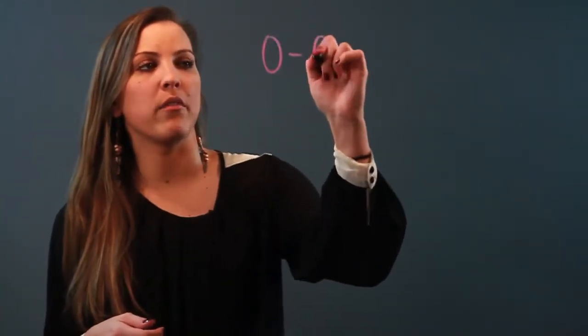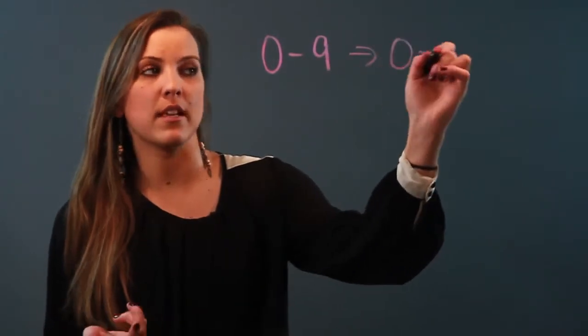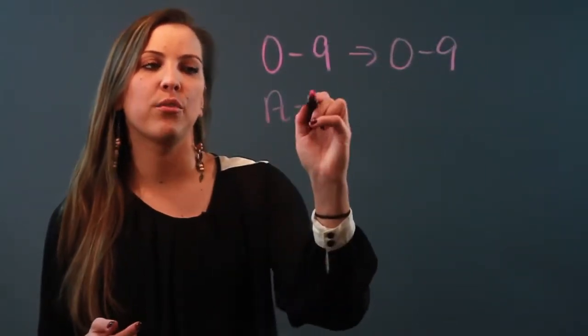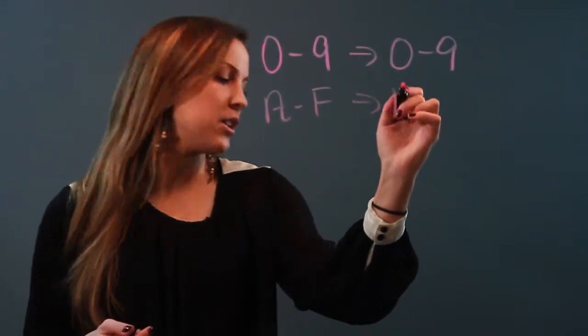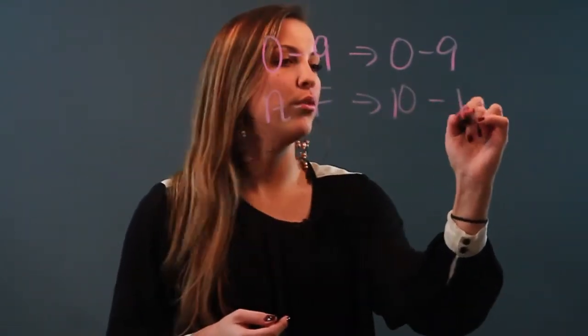So while the binary number system is a base 2, the hexadecimal numbers are base 16 and the way that they are written is 0 through 9 in the hexadecimal system represents 0 through 9, but then A through F actually represent the digits 10 through 15.